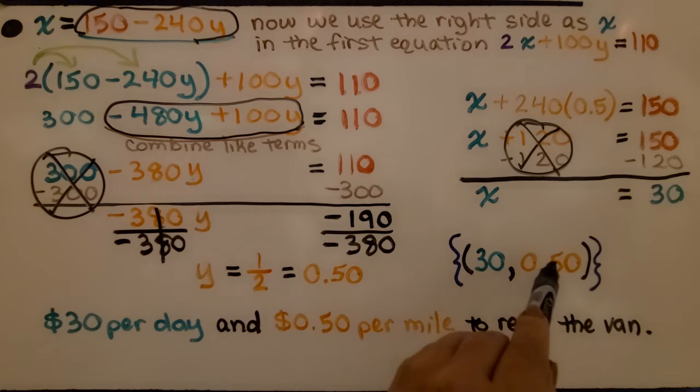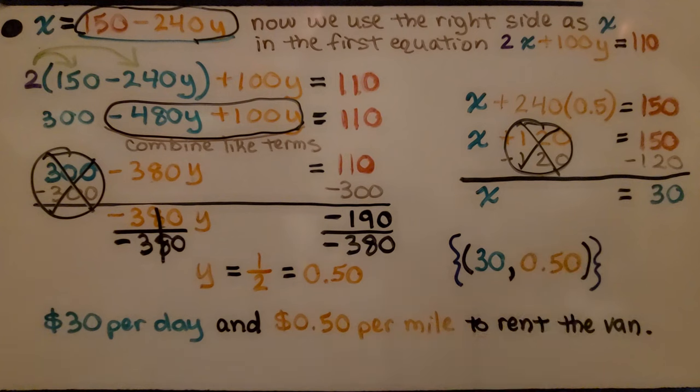Now, we have our solution for our system. We have 30 and 0.50. Since this is money, that means the charge per day was $30, and it's 50 cents per mile to rent the van. So, you're going to see, depending on the equation, that we don't have to write it in slope-intercept form. And we don't have to solve it for y right away. We could solve it for x and then y or y and then x. It depends on the equation. And the more you do them, the easier they will get because of your practice.